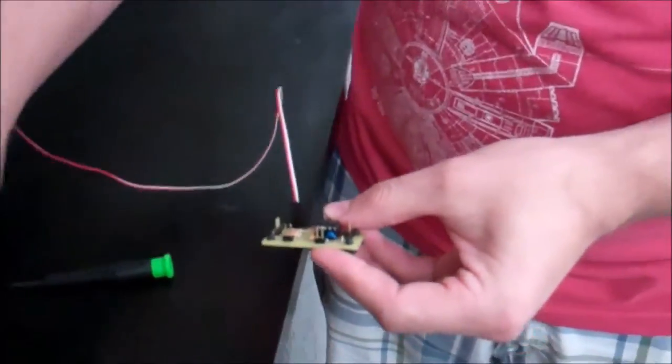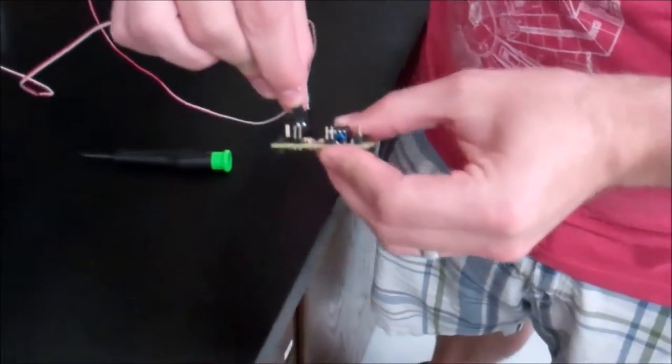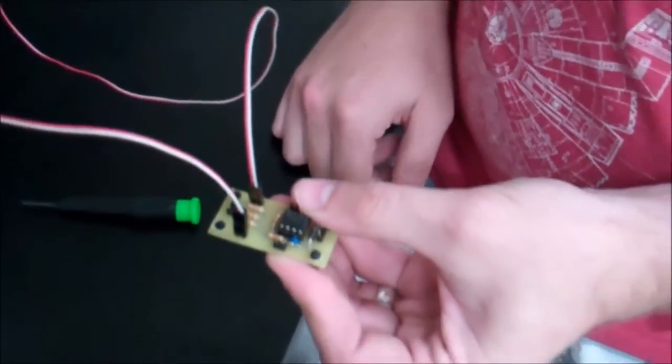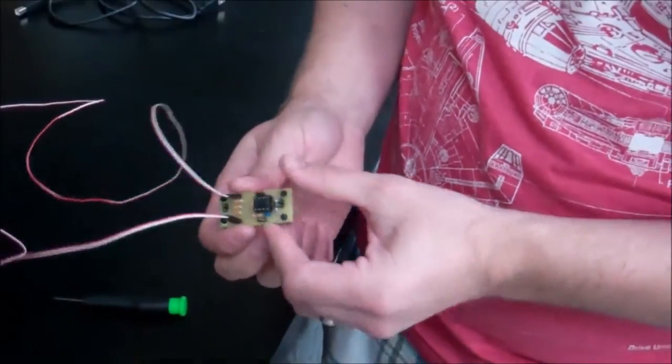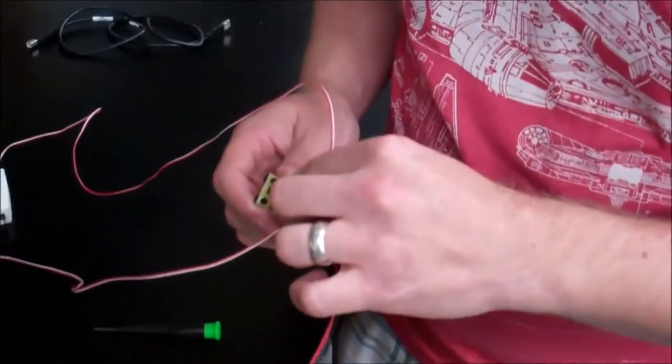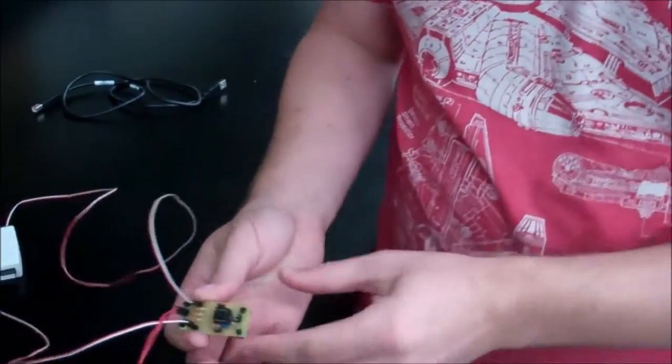Then you're going to do the same thing with the output. You're going to put the red wire to the same side again and just push it down. Then you're going to take your strain gauge wire with your little attachment and you're just going to plug it in to the port on the side.